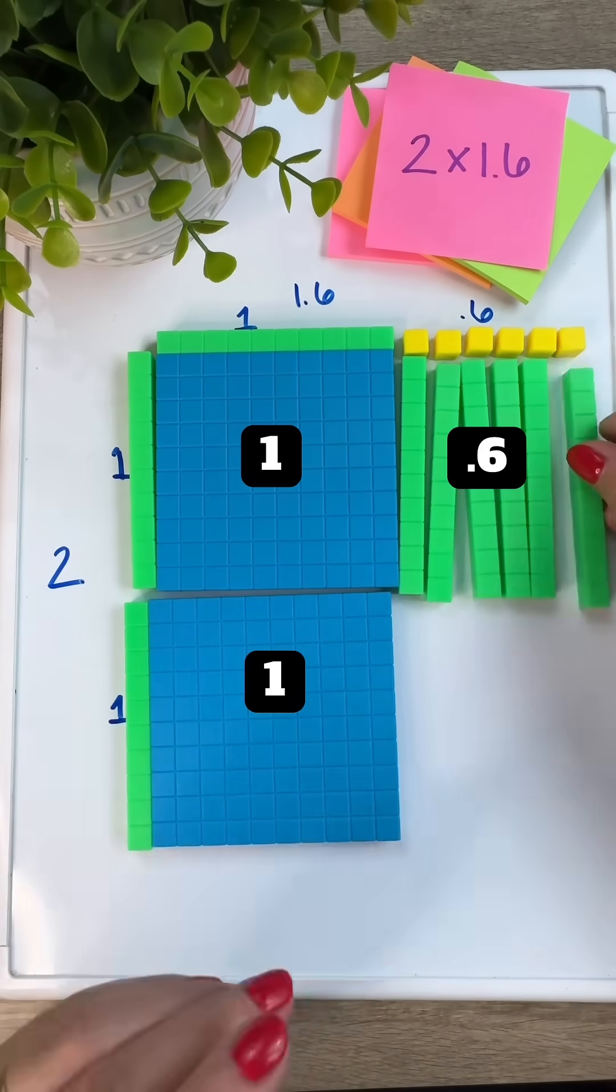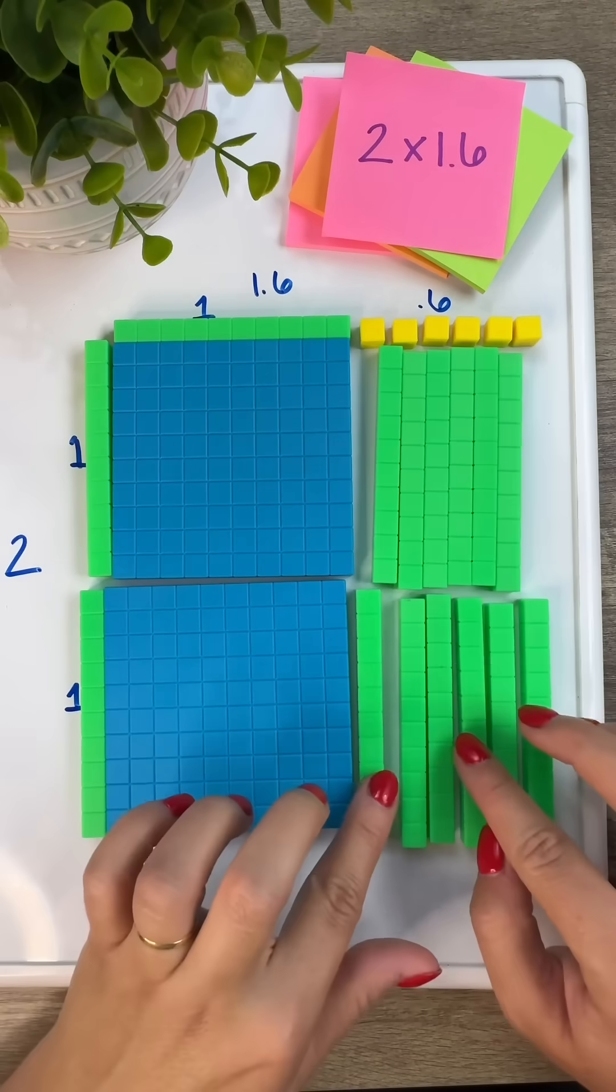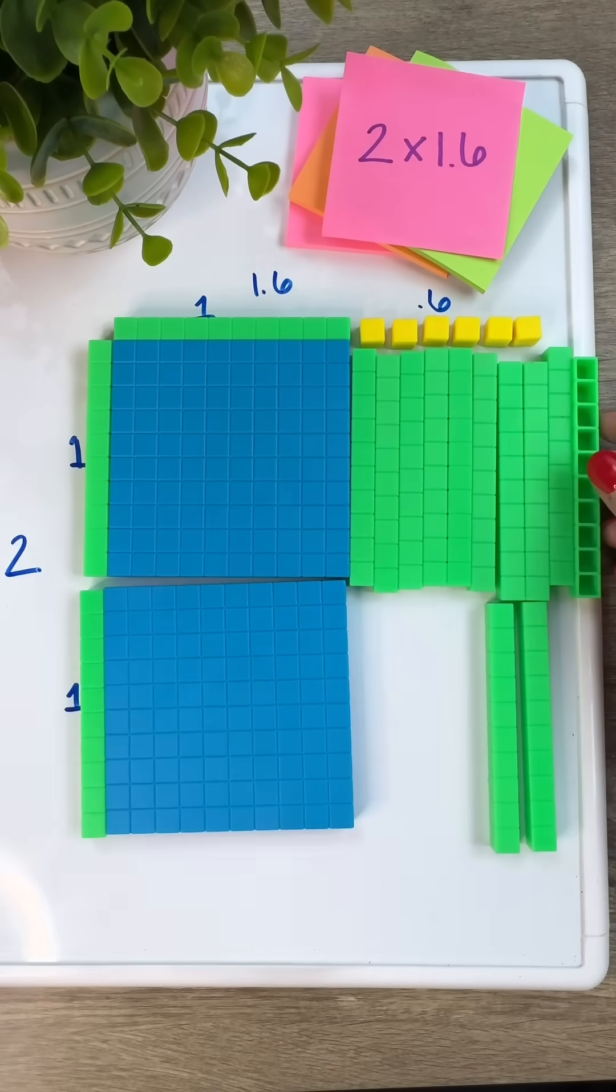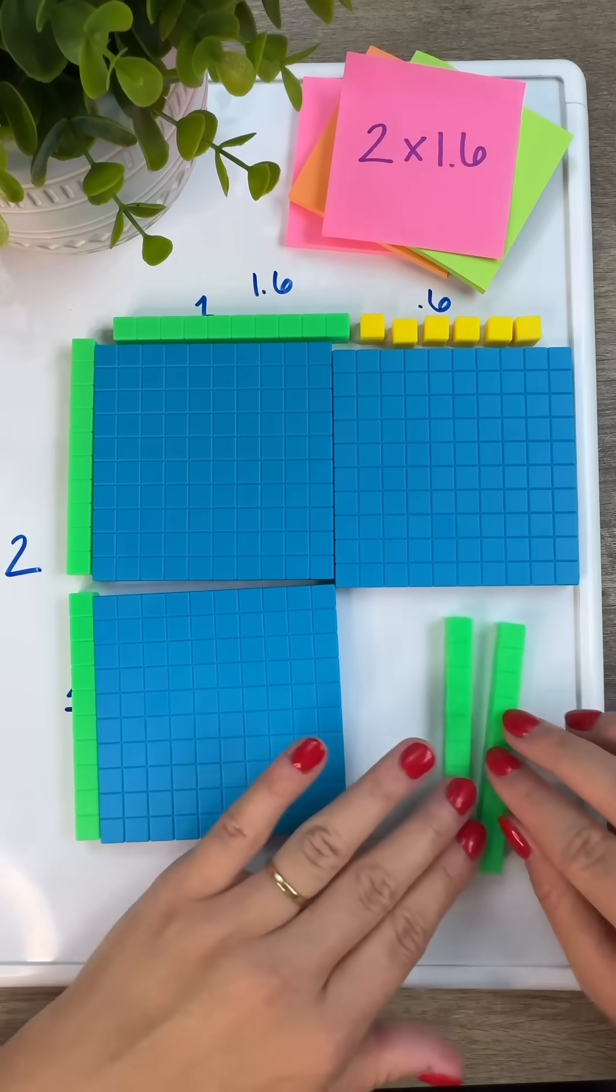Imagine if younger grades are using the area model with whole numbers. It won't be such a shock when they use this same strategy for multiplying decimals. Here I had to rename 10 tenths as one whole, and the final product is 3.2.